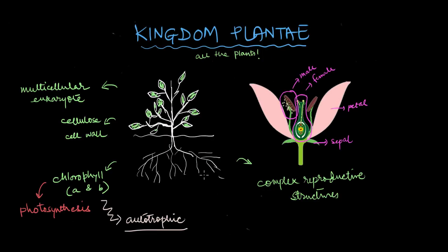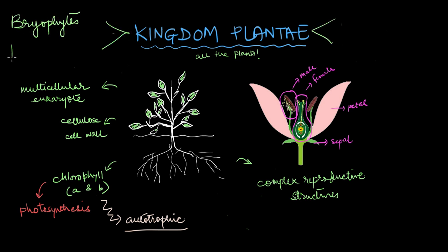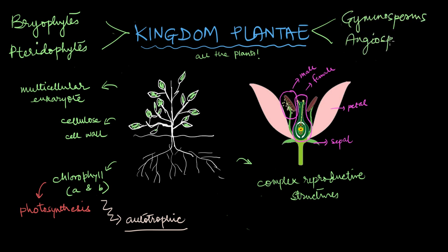There are more plant characteristics to explore, but those are more specific to a certain type of plant. Based on things like body parts, specialized tissues, and seed production, all plants have been categorized into four divisions: the bryophytes, the pteridophytes, the gymnosperms, and the angiosperms.